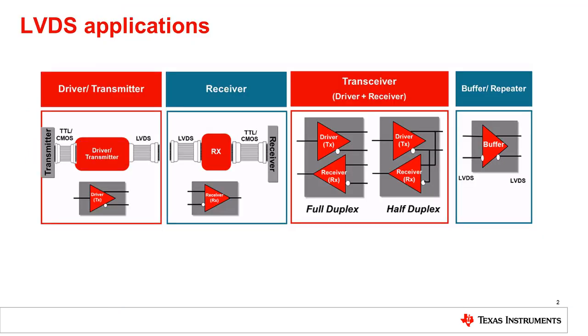LVDS can be used in many ways, depending on the system needs. There's the typical driver-receiver pair, but there are also transceivers for full duplex and half-duplex communication, and buffers for simply buffering the LVDS signals. Since LVDS can be used virtually any time there's a need to transport a signal from one point to another, LVDS applications are ubiquitous, which makes it a popular interface.